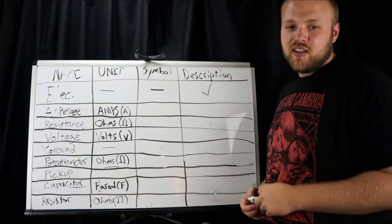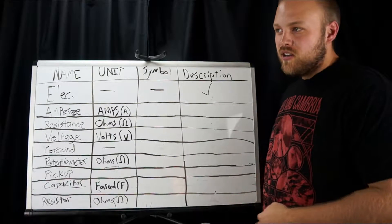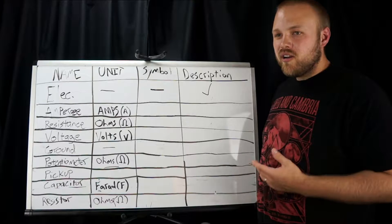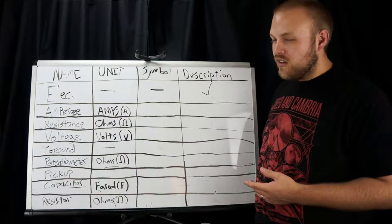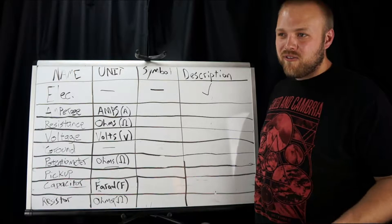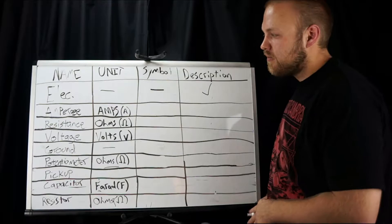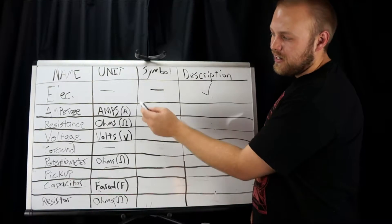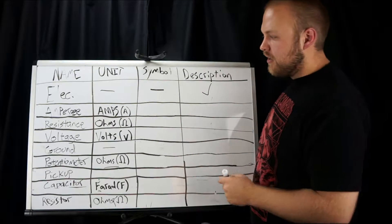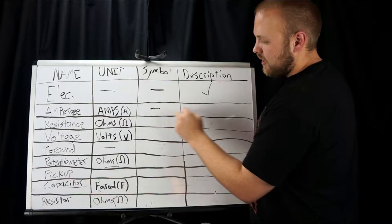Amperage is electrical current. So if you've got a fluid, current would be like how fast the water is or how much water is flowing. Its units are amps and usually that'll just be an A. Again, no symbol and we talked about it.